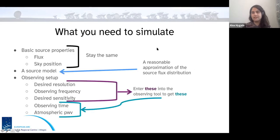So what do you need to simulate some observations? The first things that you need are basic source properties. So you need to have a measurement or an estimate of the flux of the source and know its sky position. And these obviously just stay the same. The source is what it is. You need a source model. So this is some reasonable approximation of the source's flux distribution. And this could be an image of the source in a different band, for example, at the resolution or exceeding the resolution that you're at, that you want to get out to with your observations. Or it could be some simulated model that you've chosen appropriately.